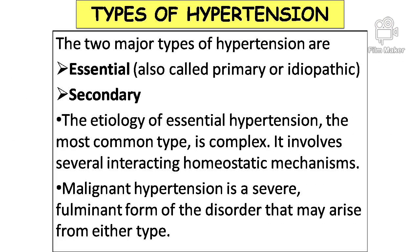There are two types. First, essential hypertension, also called primary or idiopathic. Second, secondary hypertension.